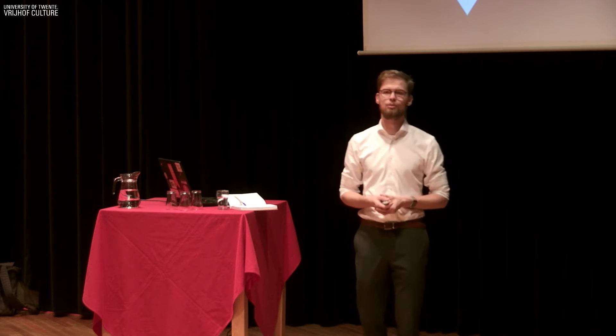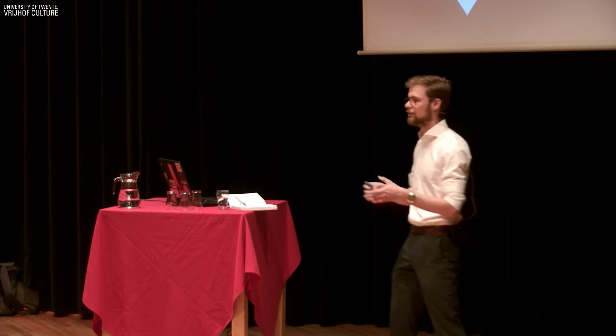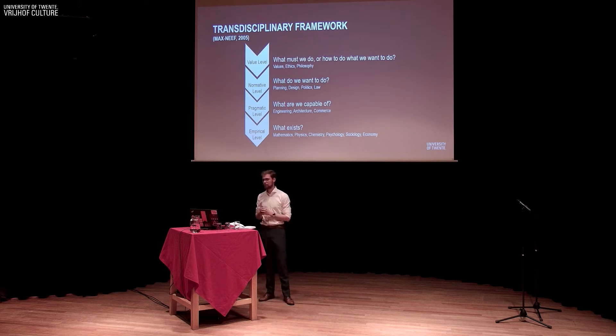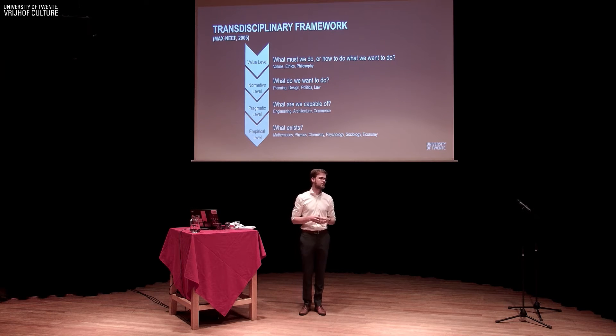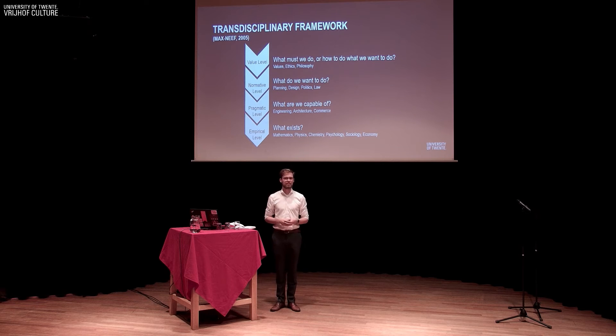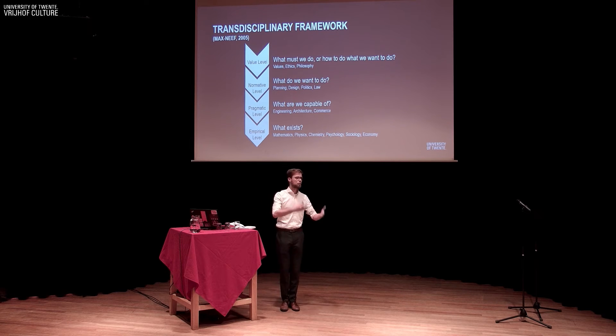The third level is: what do we want to do with the abilities that we have? We call this the normative level — you choose one thing over the other and make arguments. These arguments are reflected in disciplines such as law, politics, design, and planning. The fourth and final level overarches this and looks at what we must do, basing itself on values. It's called the value level, with disciplines such as ethics and philosophy. That informs what we want to do, which informs what we are capable of, which then goes on to what exists and changing that.